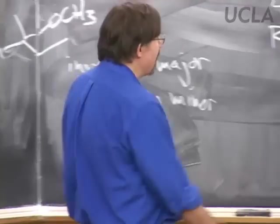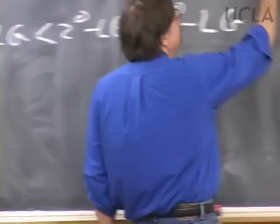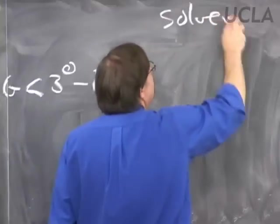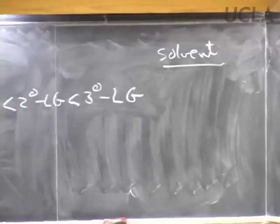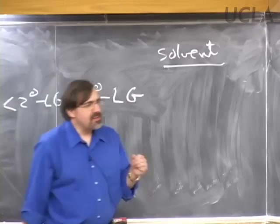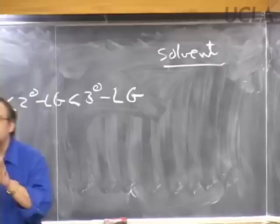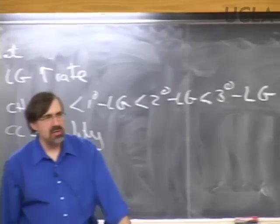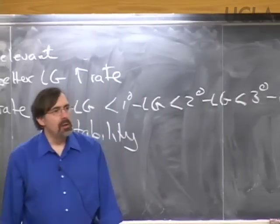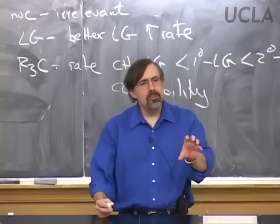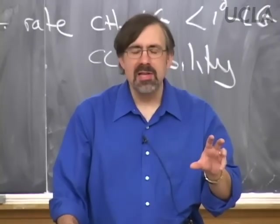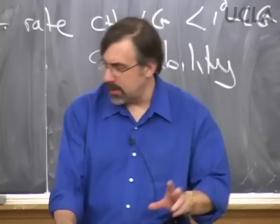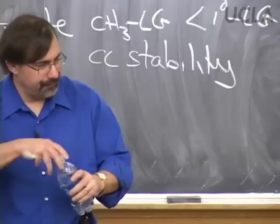There is one variable we have not talked about yet, and that is solvent. In SN2, the preferred solvent depends on the nature of the reactants. If either or both reactants have charge in SN2, we prefer a solvent of middle-of-the-road polarity and aprotic.